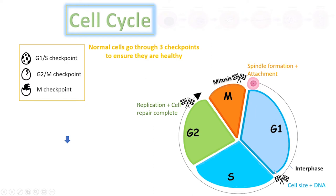The first checkpoint is there to ensure cell size and DNA is correct. The second checkpoint is important in making sure replication is complete. If any cell has an issue, this is where the cell will stop its progress until repair is complete. If the damaged cell is unable to repair, it will undergo apoptosis, also known as the death of a cell.